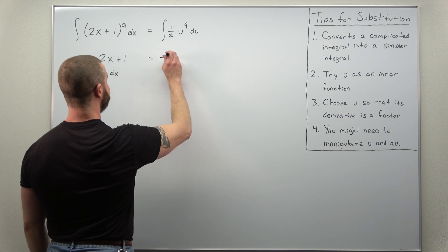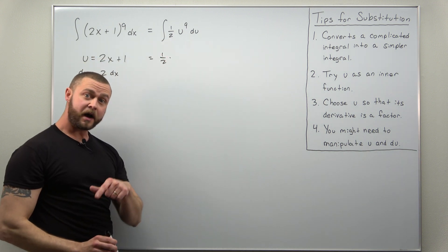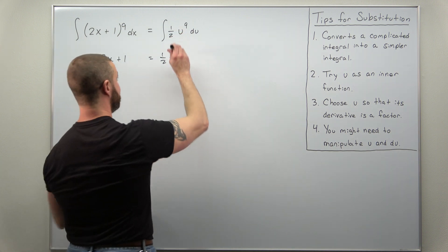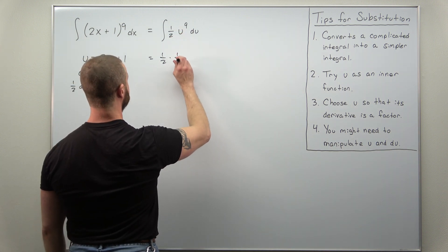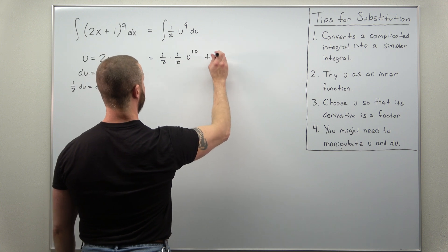So we keep the factor of a half, add 1 to 9 you'll get 10, so we get a 1 over 10 times u to the 10th power.